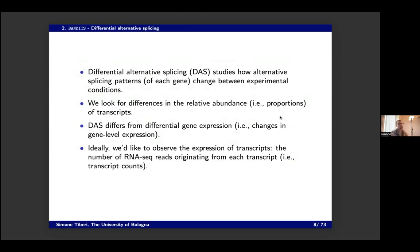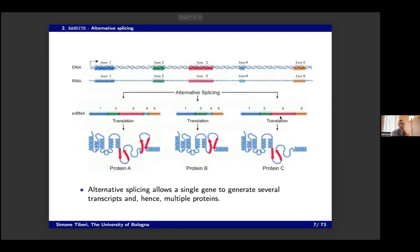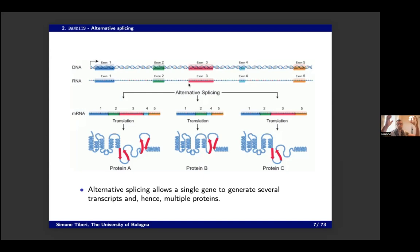When we talk about changes in alternative splicing patterns, we mean the relative abundance of the transcripts. If you have a gene that codes for three transcripts, in one condition you might express 70% transcript A, 30% transcript B, and never transcript C; while in another condition, 50% A, 20% B, and 30% C. We look at relative abundances within a gene. This is different from differential gene expression, where we look at the overall abundance at the gene level and aggregate all reads together.